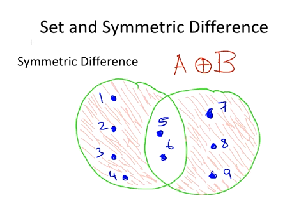It's the area shaded in pink here. So it's 1, 2, 3, 4, 7, 8, and 9. You could think of it as the union of the two set differences together.